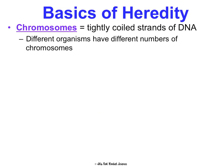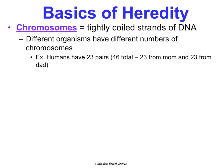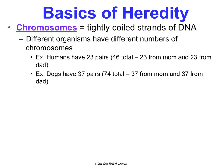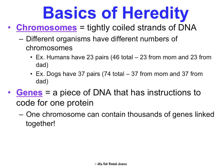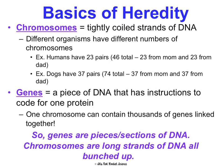Chromosomes are tightly coiled strands of DNA. Different organisms have different numbers of chromosomes — humans have 23 pairs, or 46 total chromosomes, with 23 from mom and 23 from dad. Dogs have 37 pairs, or 74 total. The number of chromosomes doesn't reflect complexity — it's just how DNA is coiled up. Genes are pieces of DNA that have instructions to code for one protein, and one chromosome could have thousands of genes on it. Genes are sections of DNA; chromosomes are long strands of DNA bundled up.